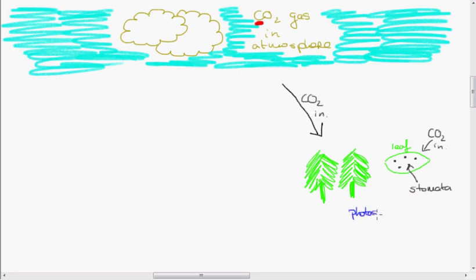And the plants use this carbon dioxide to make glucose in the process of photosynthesis. And glucose is C6H12O6. So the carbon is now there in the glucose.